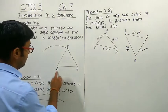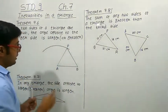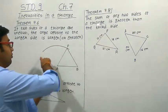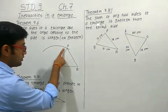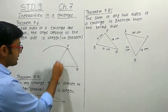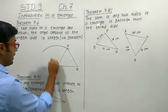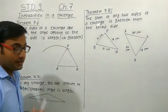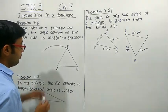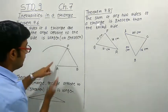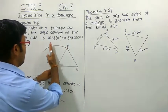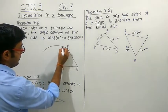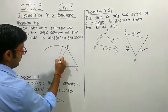Let us understand this by taking an activity. Here we have drawn triangle PAB. By taking A as the center and AP as the radius, we have drawn an arc. So AP is the radius — any line segment drawn from A to a point on the arc has the same length equal to AP. Now we fix point A and move point P along the arc.